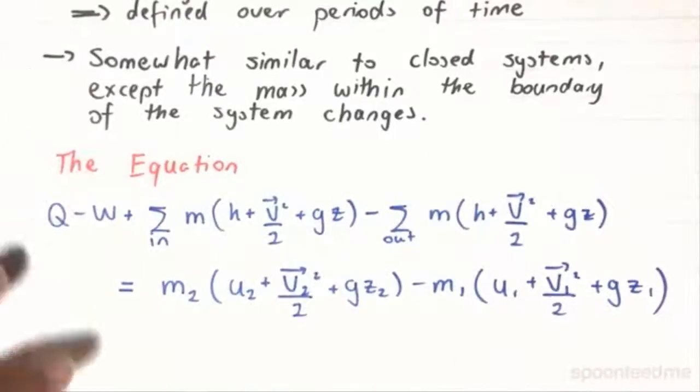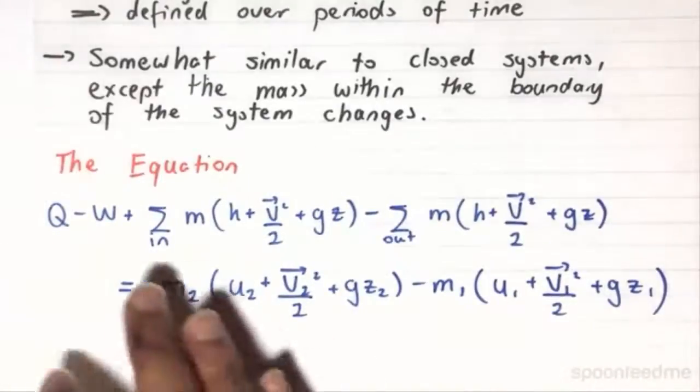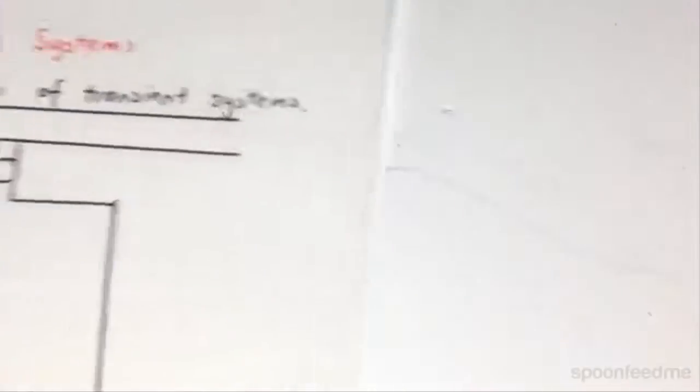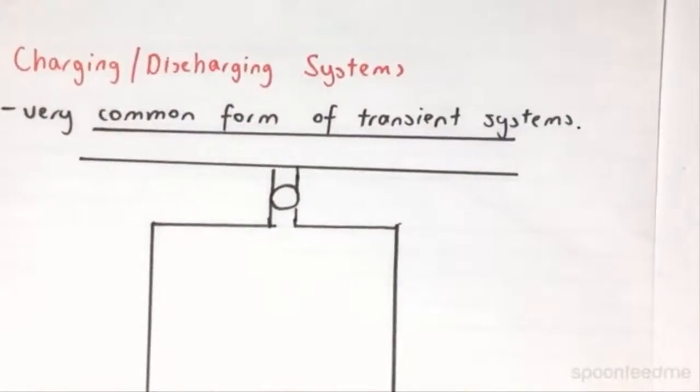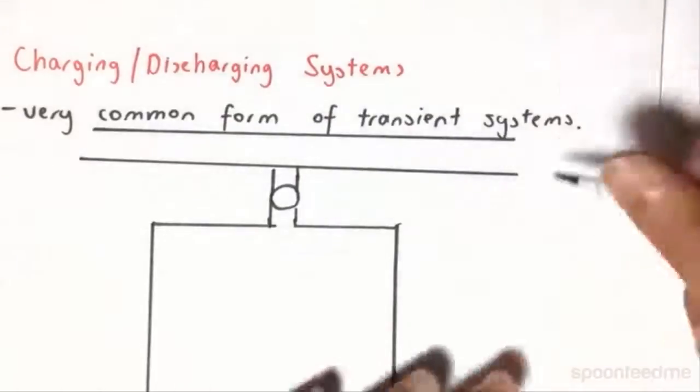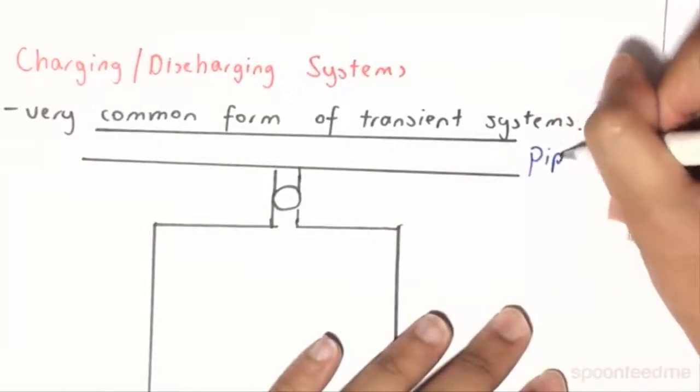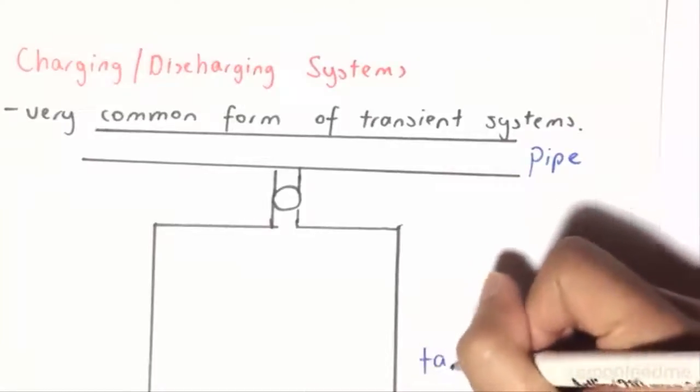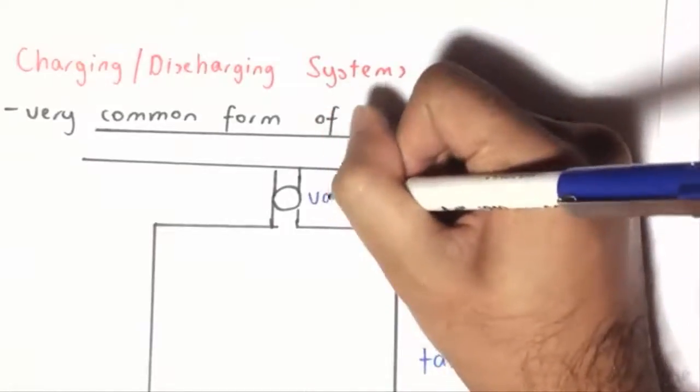So in order to illustrate exactly how this works in terms of a charging system, we look at the following diagram. Now, quickly to define what a charging system is, what we have over here is a pipe. And over here we have a tank, and they are separated by a valve.